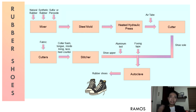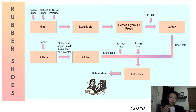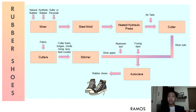Meanwhile, shoe upper fabrics are placed into cutters that shape the different parts of the shoe, such as the collar, foam, tongue, inside lining, and heel counter. The different parts are then stitched together to form the upper part of the shoe, which is placed over a shoe last — a mold that emulates a foot to give the shoe its shape, made of aluminum to sustain and spread heat evenly during vulcanization. A foxing tape, also known as an outsole wall, is used to bond the upper and the sole.